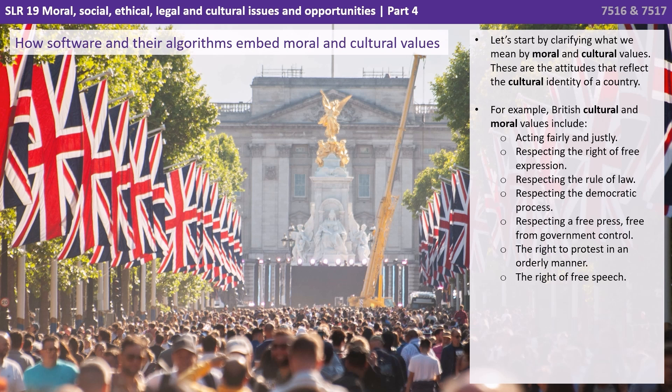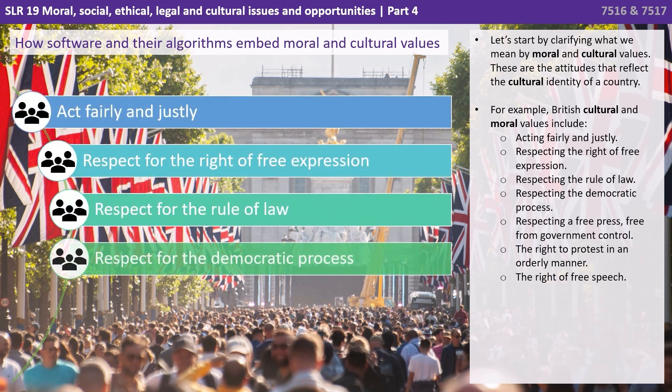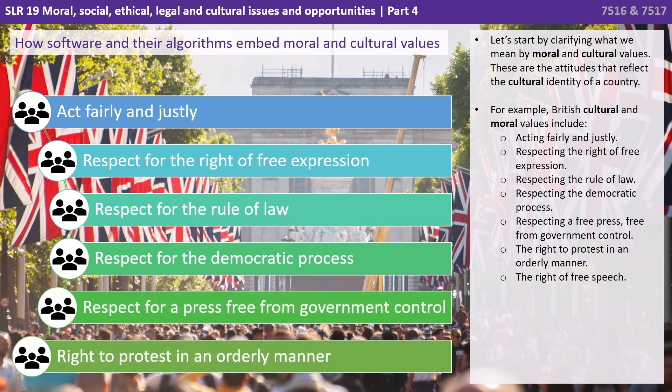Let's clarify what we mean by moral and cultural values. These are the attitudes that reflect the cultural identity of a country or region. For example, you could say that typical British cultural and moral values include acting fairly and justly, respecting the right of free expression, respecting the rule of law, respecting the democratic process, respecting a free press free from government control, the right to protest in an orderly manner, and the right of free speech.